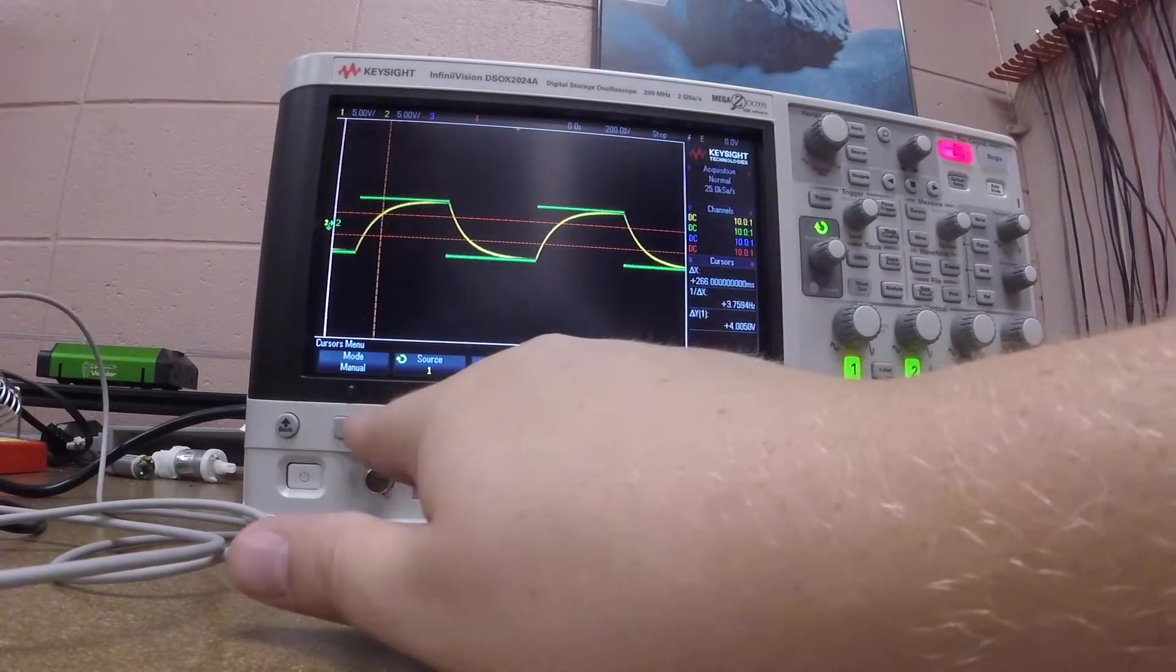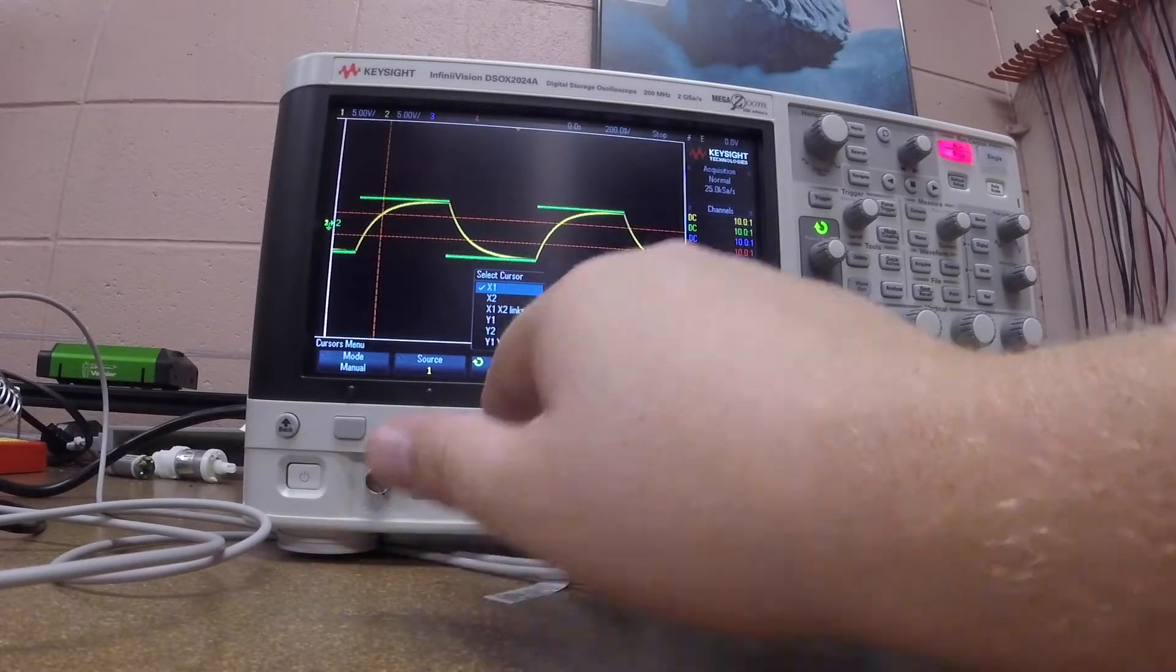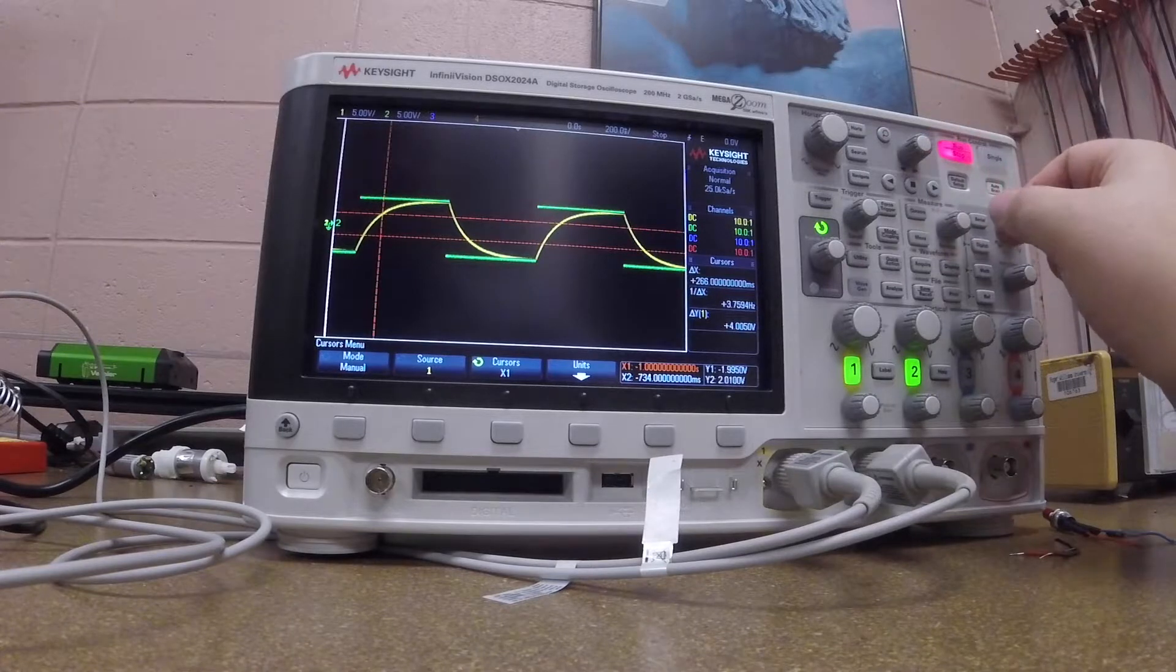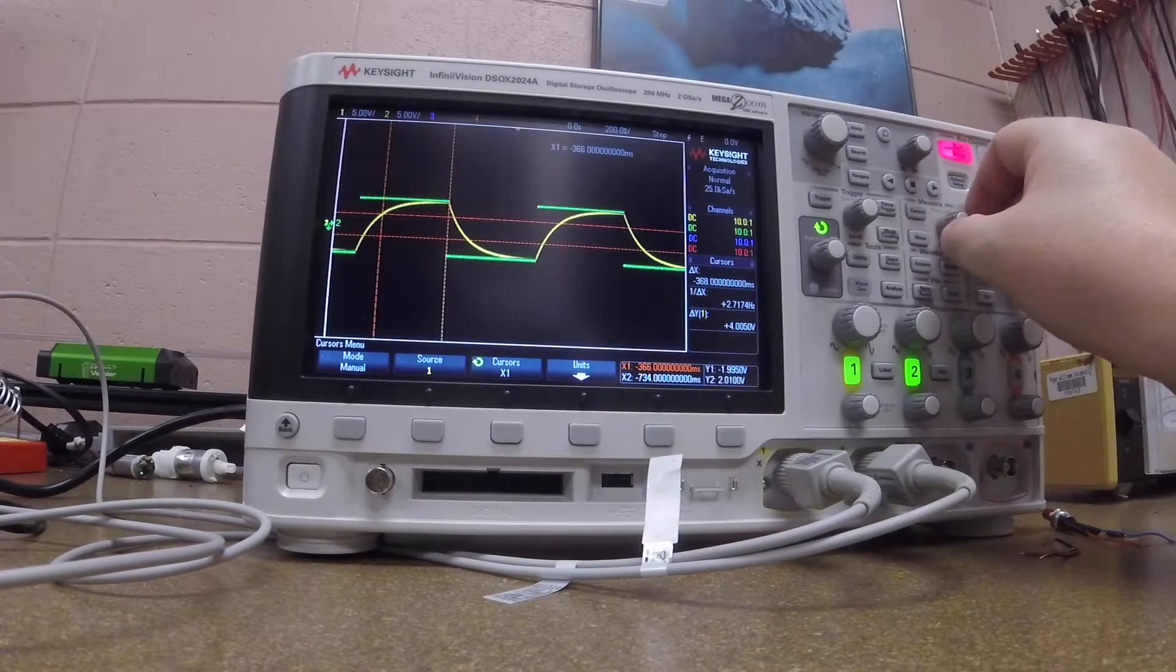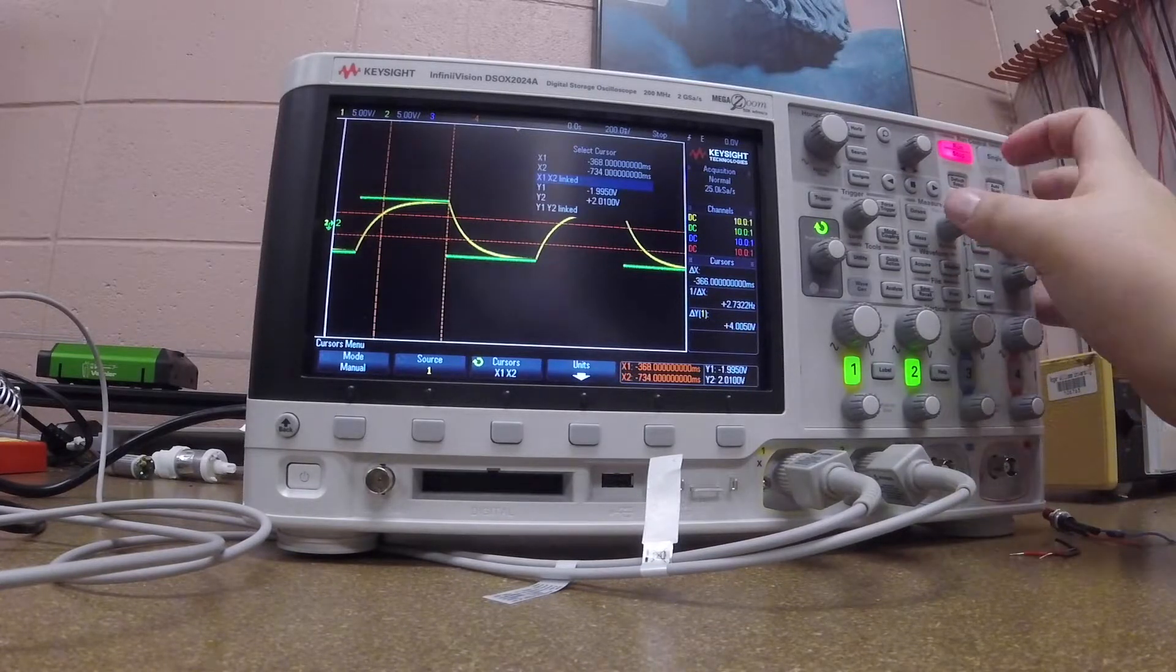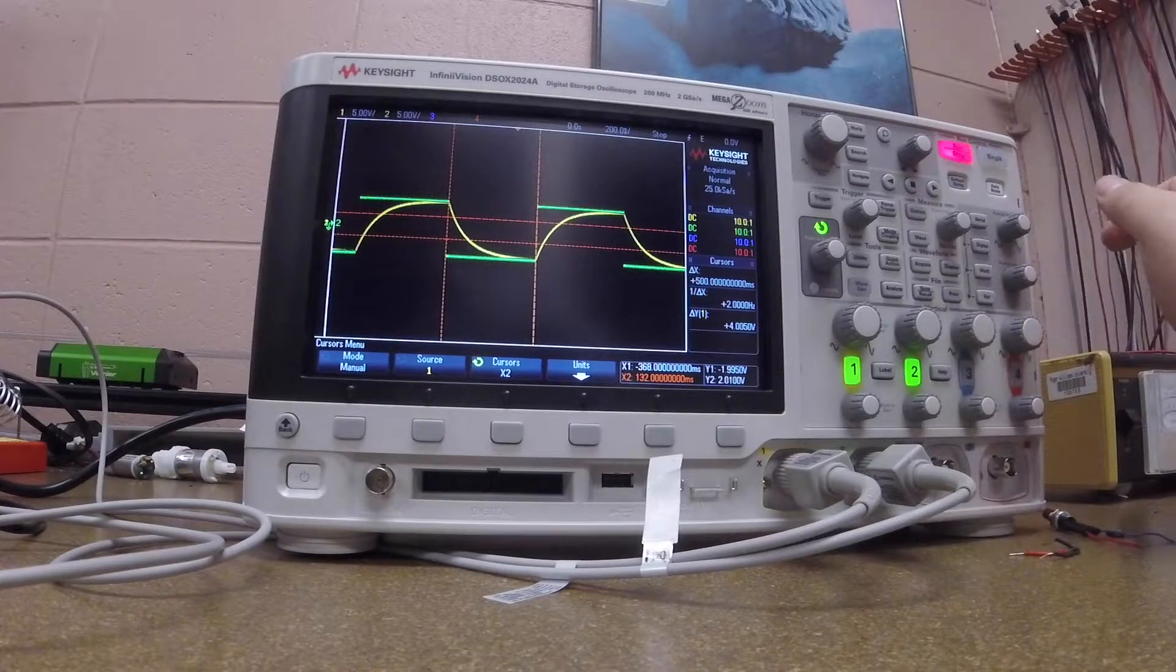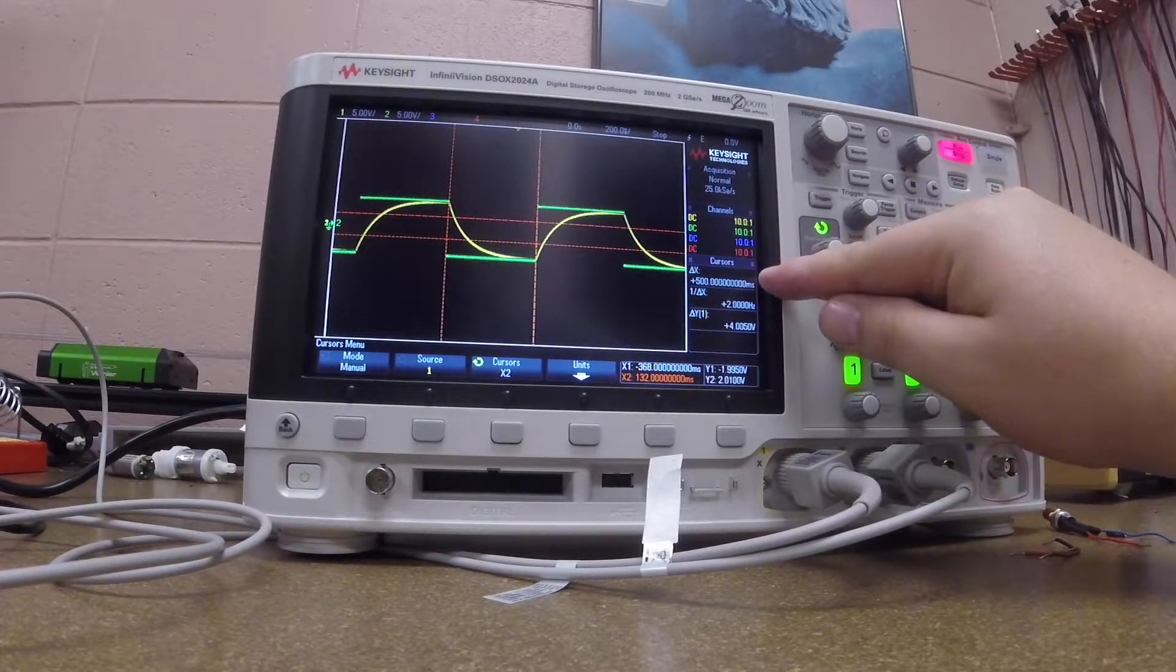I can choose a mode and source and choose which cursor I would like. In this case, I want to choose X1. What this will let me do is measure differences on the X direction. I'm going to put it right here on this falling edge. I'm going to go ahead and change to X2, and then I can see this. What you can see right here is that it gives me a delta X.